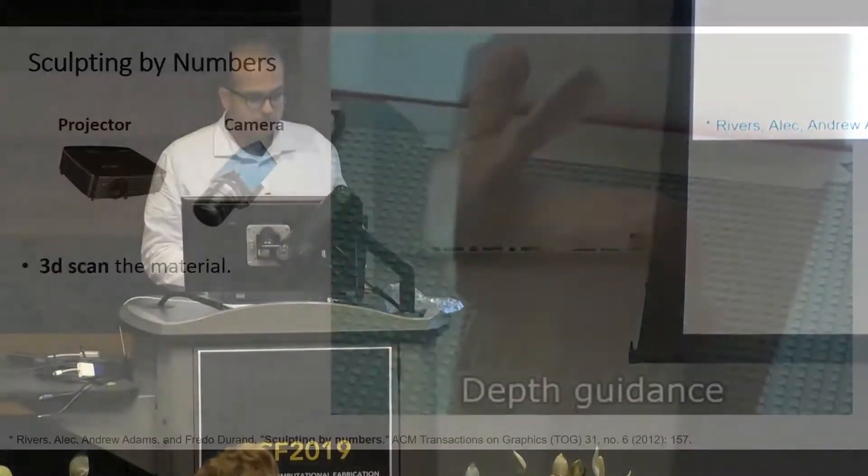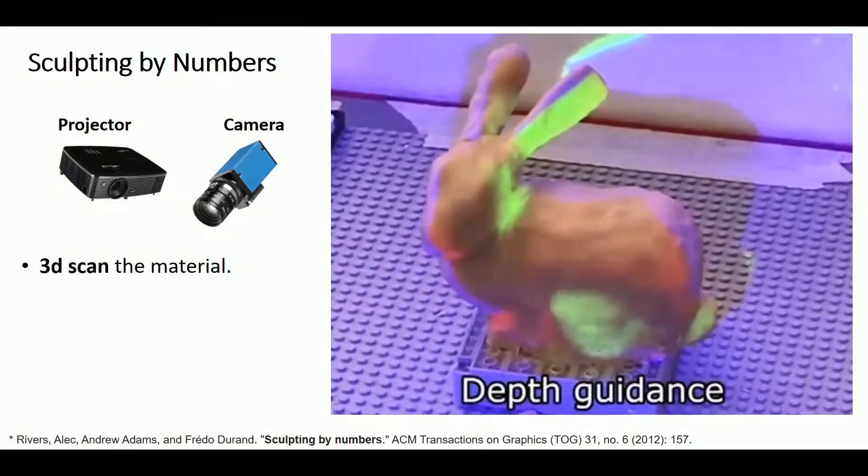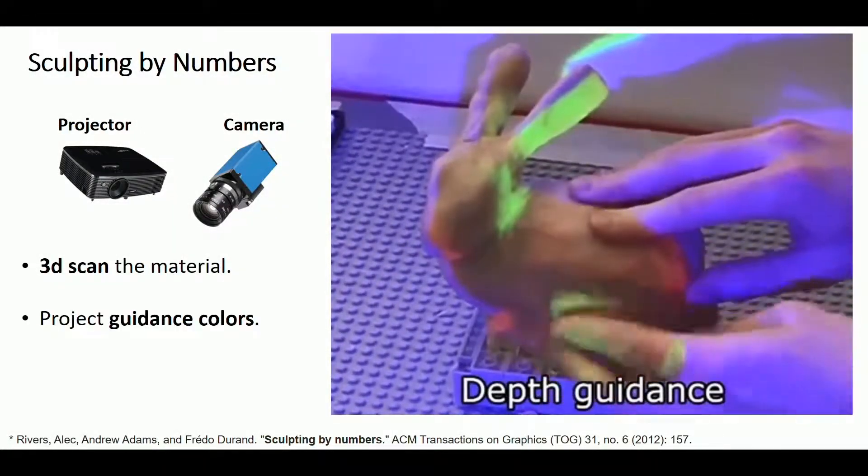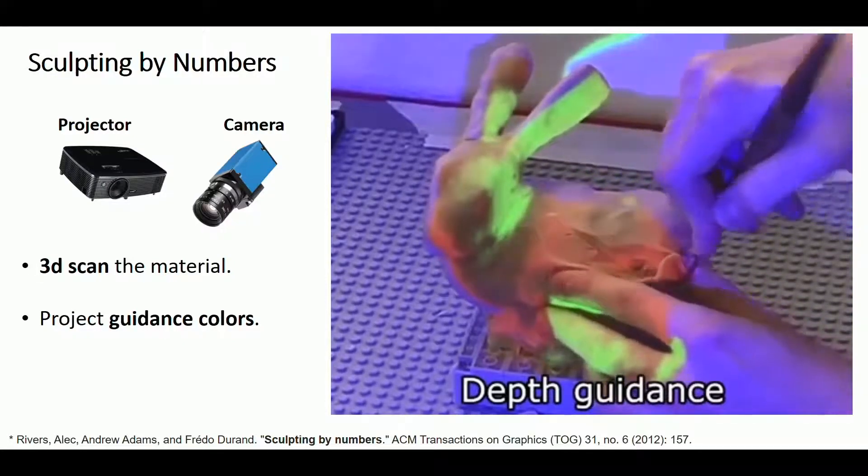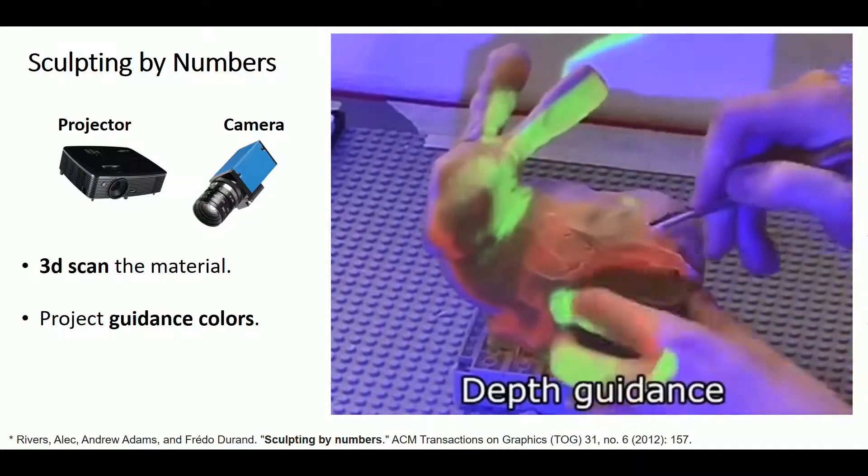They used a projector and a camera, first to 3D scan the material for sculpting, then to project guidance colors to help the user tell where they need to add or remove material to shape the object.